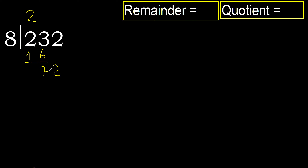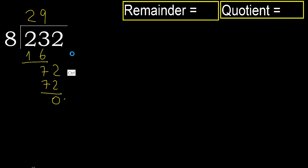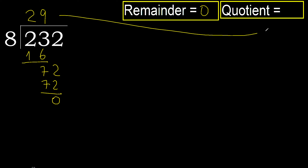72. 8 multiplied by 9 is 72 — 72 is not greater, ok. Subtract: remainder is 0. Next digit: there is no number, therefore finish. 232 divided by 8 is 29.